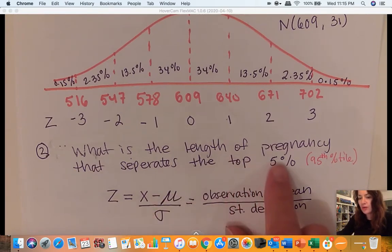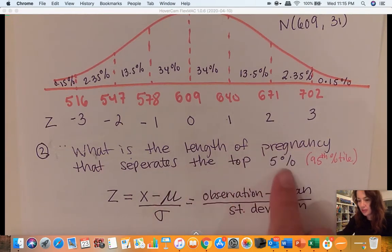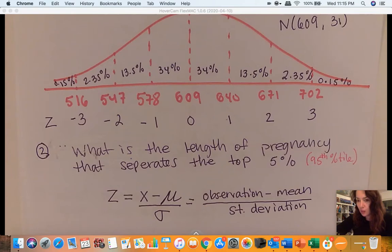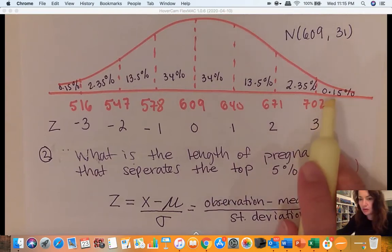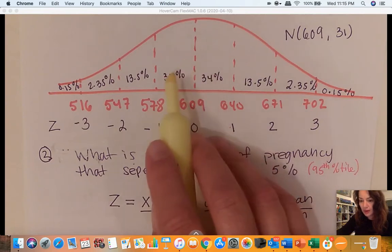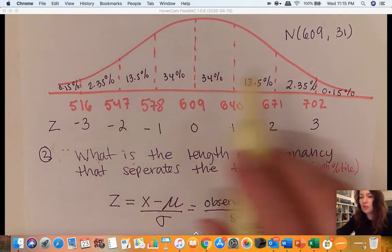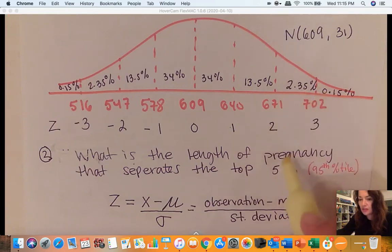Right now we are asked, what is the length of pregnancy that separates the top 5%? So first of all, where is the top 5%? We can estimate it using the empirical rule. We know that 68% is one standard deviation left and right. If we added up all the areas from the top, the top 5% would be on the right.